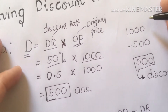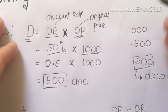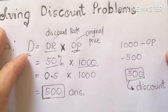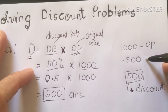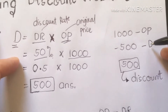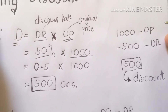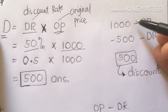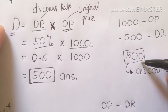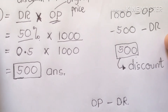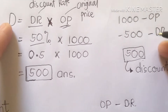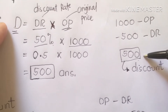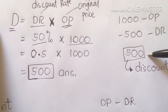Then we are going to subtract the original price (OP) by our discount. We have 1,000 minus 500. The answer is 500. Therefore, this is the amount we are going to pay the cashier, which is 500 pesos for that particular product.